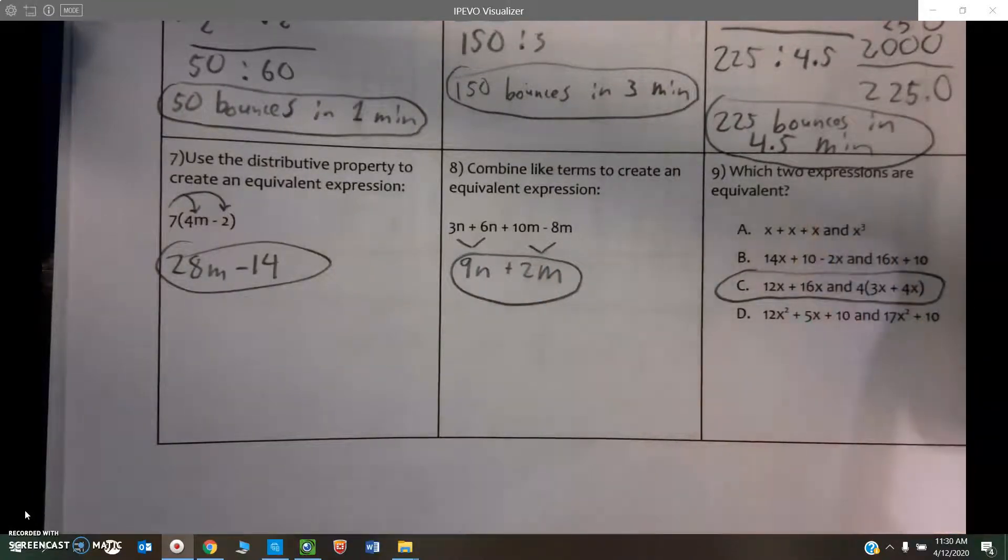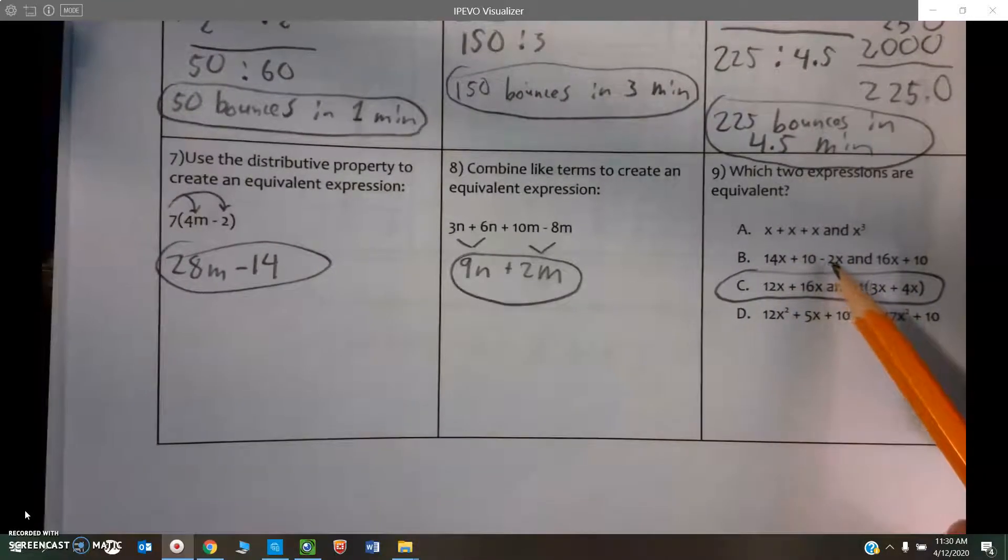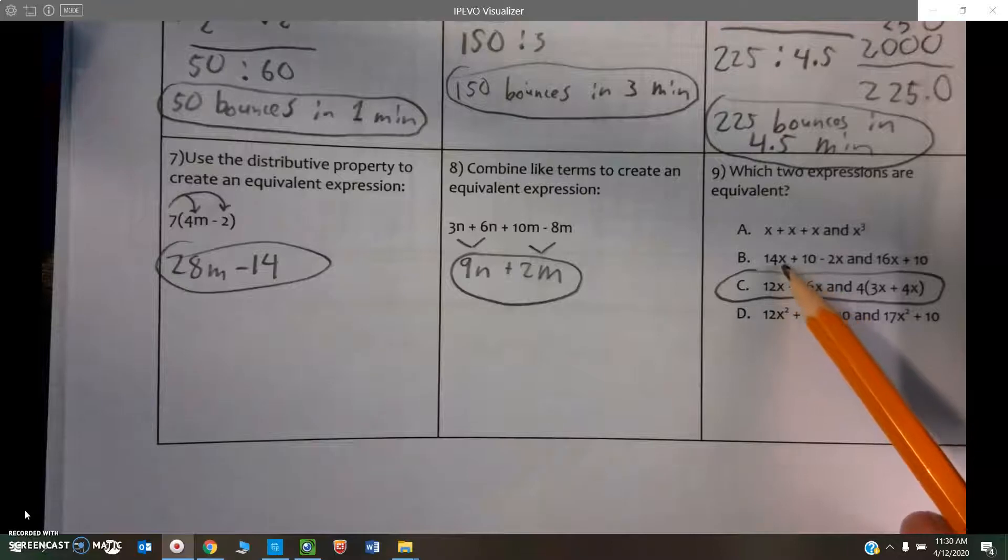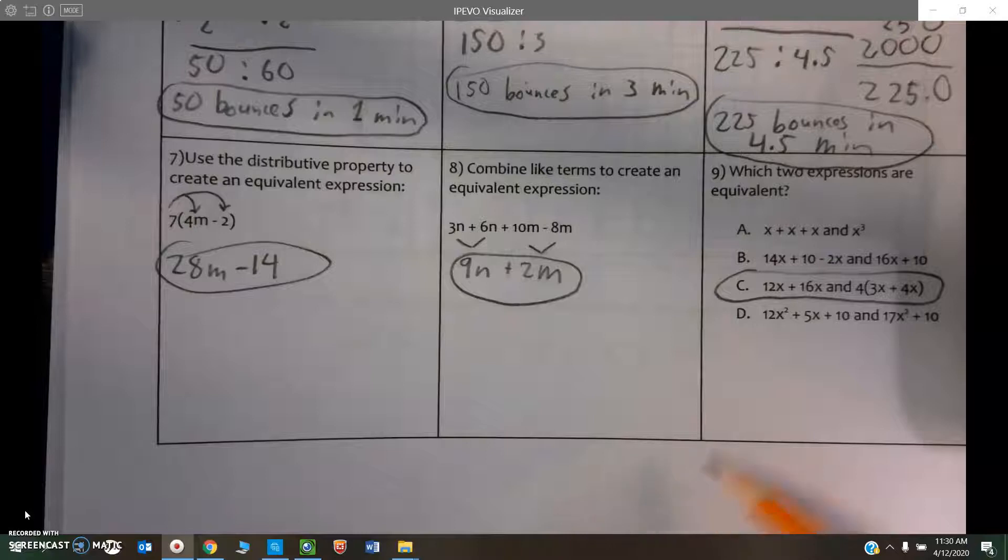And now, for number nine, you have to see which one is equivalent. This one is incorrect because exponents are repeated multiplications, so this would have to say x times x times x. This one's incorrect because if we combined like terms, 14x minus 2x, this would have been 12x, not 16x.